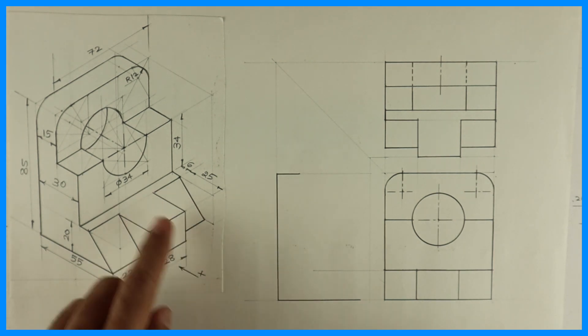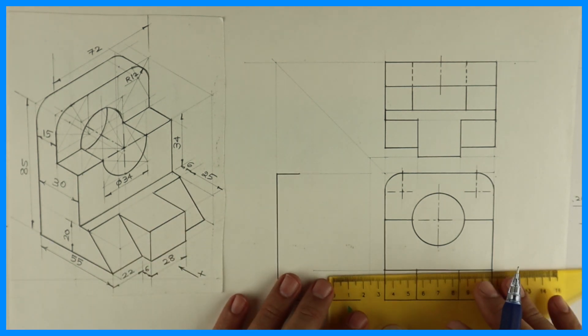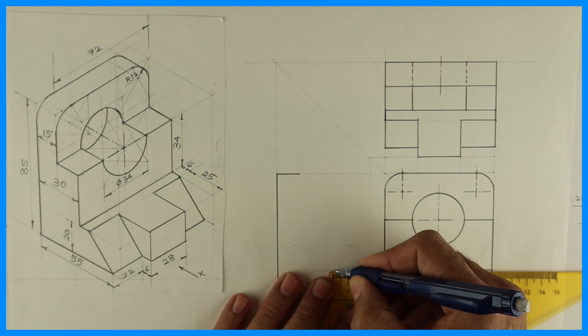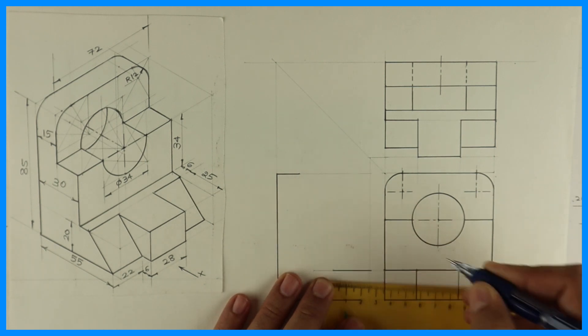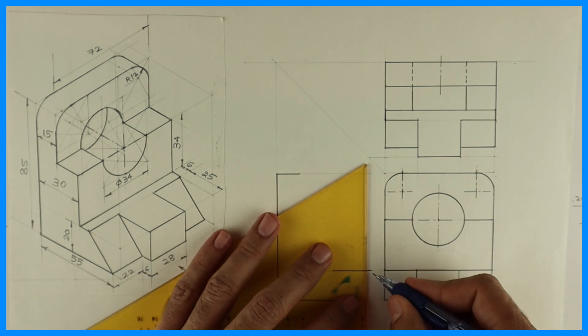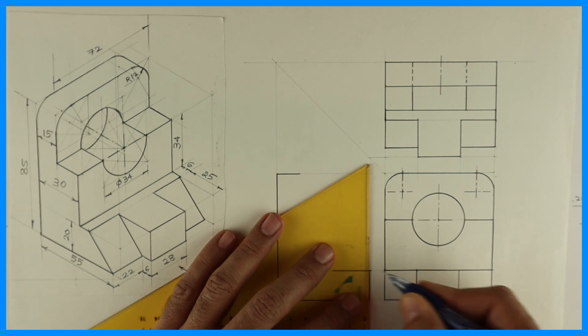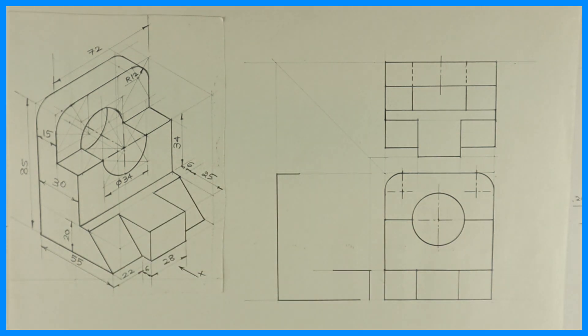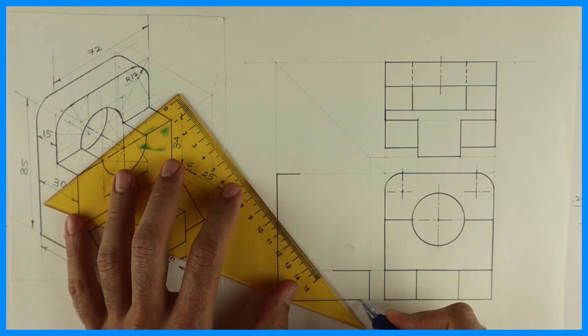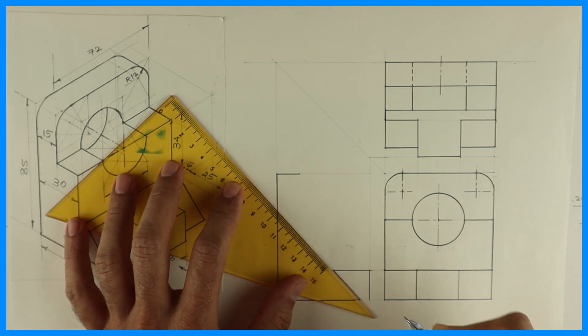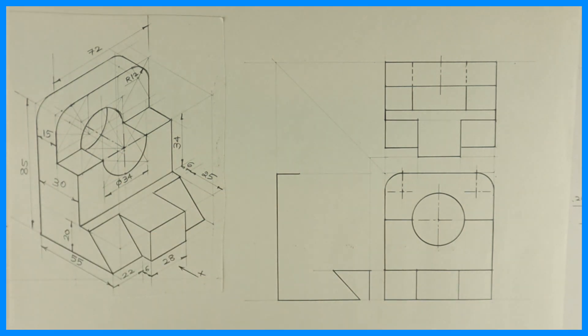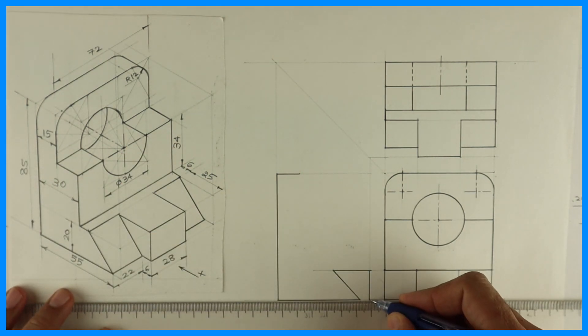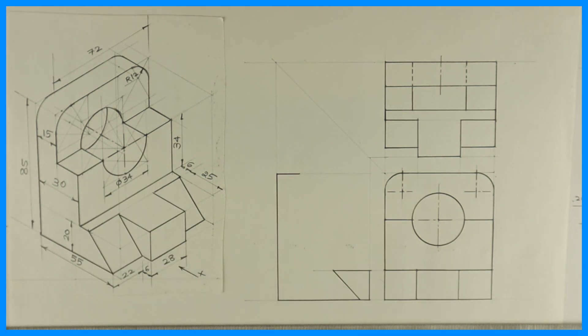Then you draw this line. How much is this? 25. So take 25. This is 65, so you can join this directly like this. See this slope. Now this is how it will look in side view.